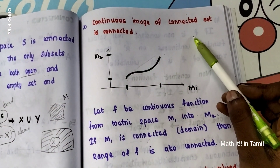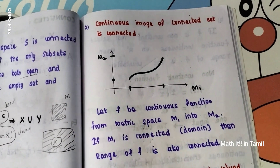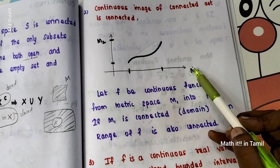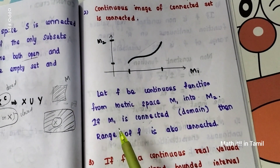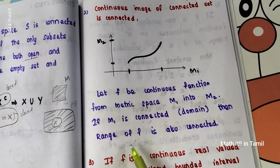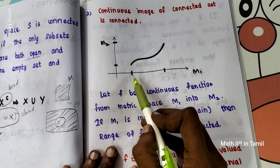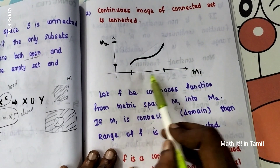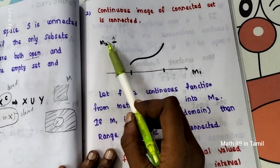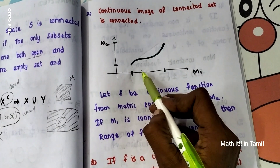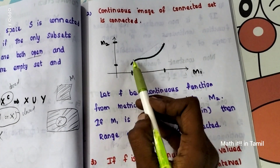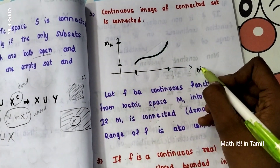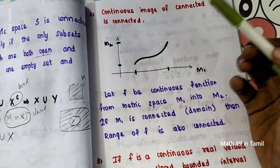Now, this is one important statement: the continuous image of a connected set is connected. Let f be a continuous function from metric space M1 into M2. If M1 is connected, then the range of f is also connected. So the input is on the x-axis and the output is on the y-axis. The domain maps to the co-domain, and the range is the image.